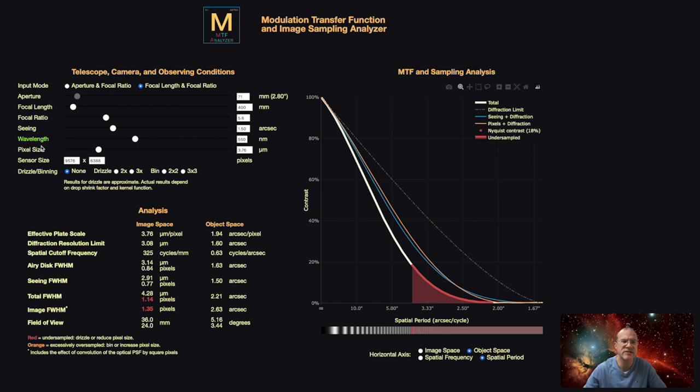Now, the next thing we have to enter is the wavelength. The 550 nanometers are about an average for the visible light. So, we can leave it at that or if you're very specific, if we want to know it mostly for HA, for example, or if you do a lot with O3, we could obviously enter here specifically the nanometers for these emissions. The next thing we have to enter is the pixel size of your camera. That is for my 2600 3.76. Next, we have to enter the sensor size. So, again, for my 2600 MC, that's sensor size by pixels. Drizzle binning we leave at the moment at none. And so, now we have entered everything.